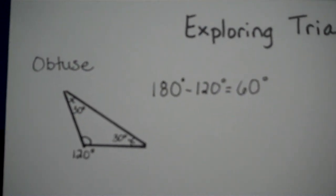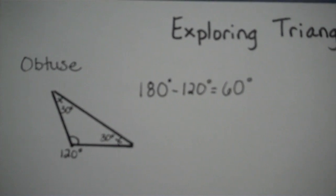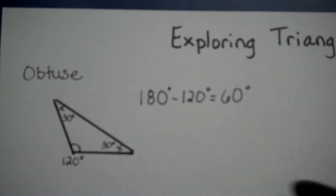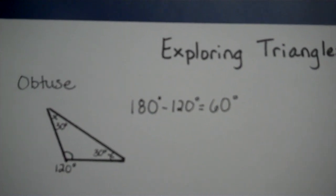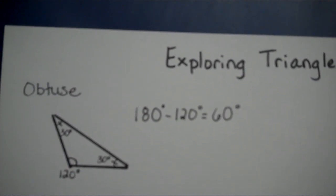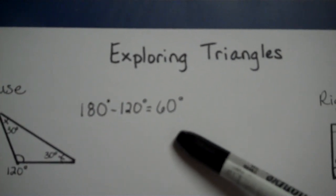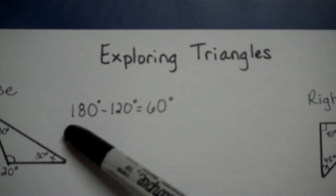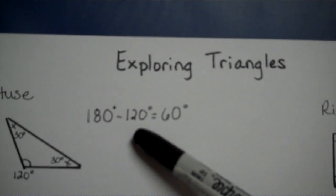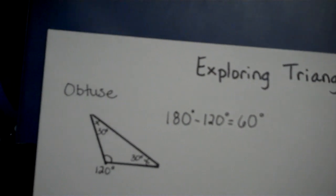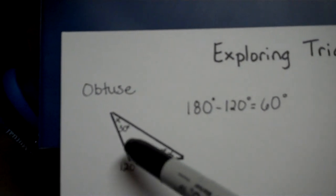In this obtuse triangle, the obtuse angle measures at 120 degrees. If all of the angles have to add up to 180 degrees, what do we have left to work with? We see here that 180 minus 120 equals 60 degrees. So the other two angles have to be 30 degrees.